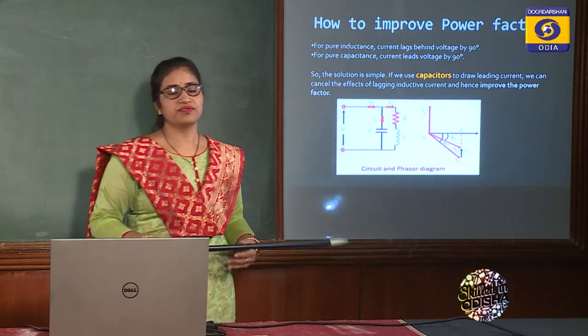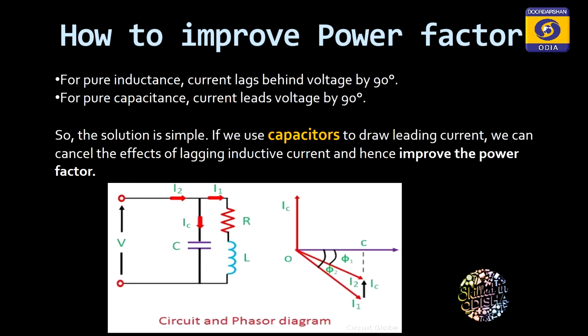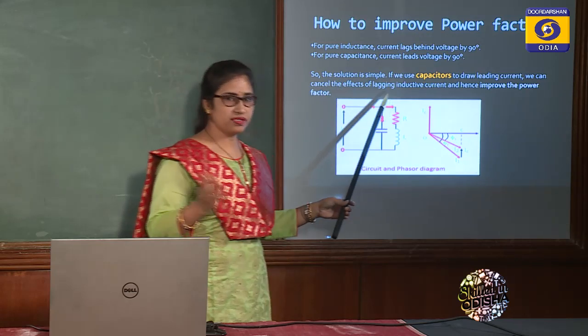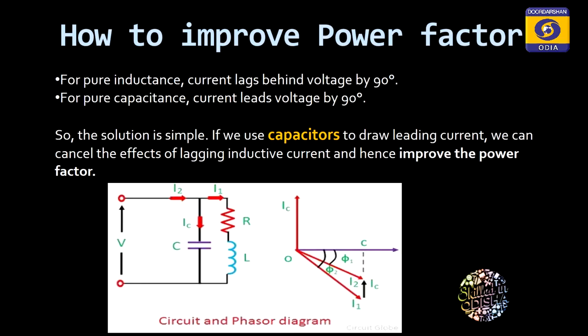So how to improve the power factor? By knowing that inductive loads draw magnetizing lagging current, if we do something to increase leading current in the circuit, it will improve the power factor. The basic and simple solution is to use capacitors, because capacitors supply leading current.